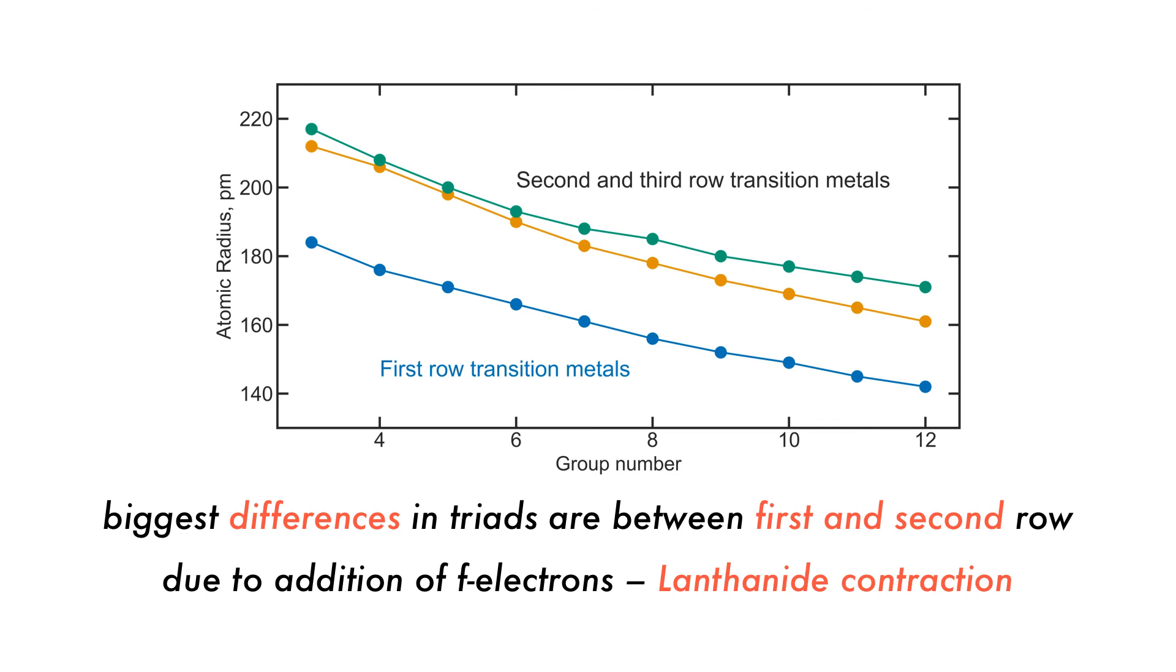The difference between the second and third row, however, is marginal. This trend is called the lanthanide contraction and is caused due to the addition of f orbitals in the second and third row transition metals.